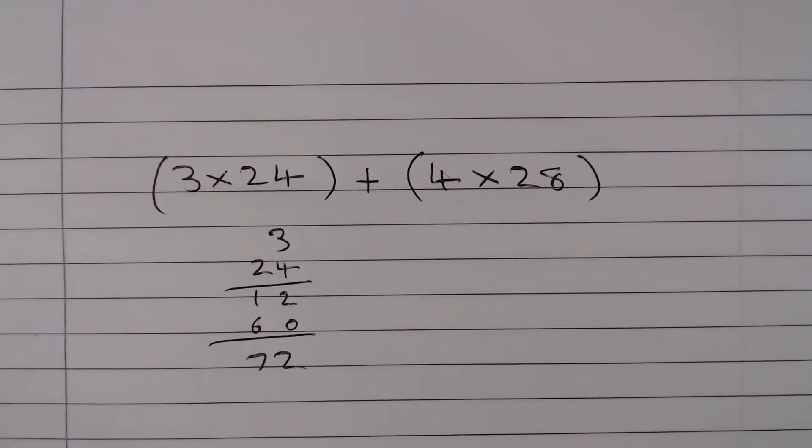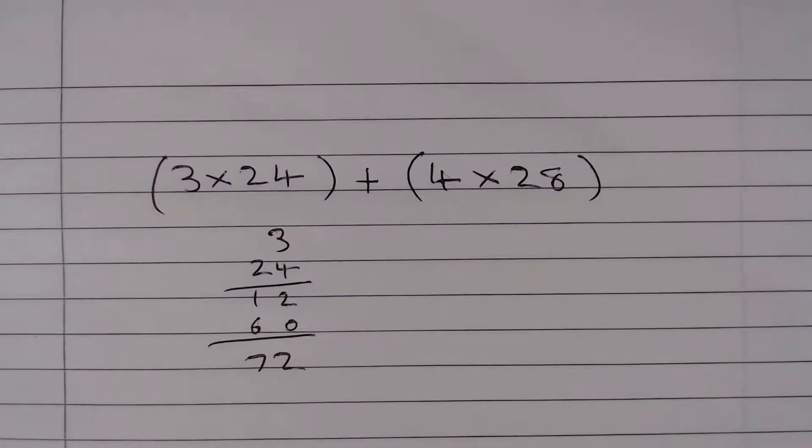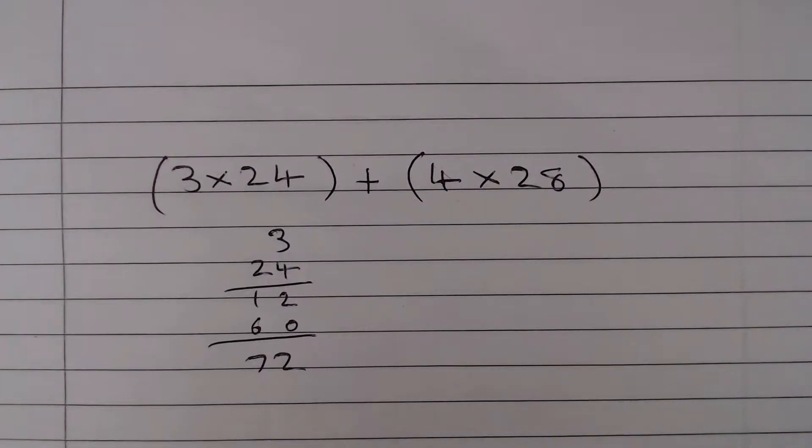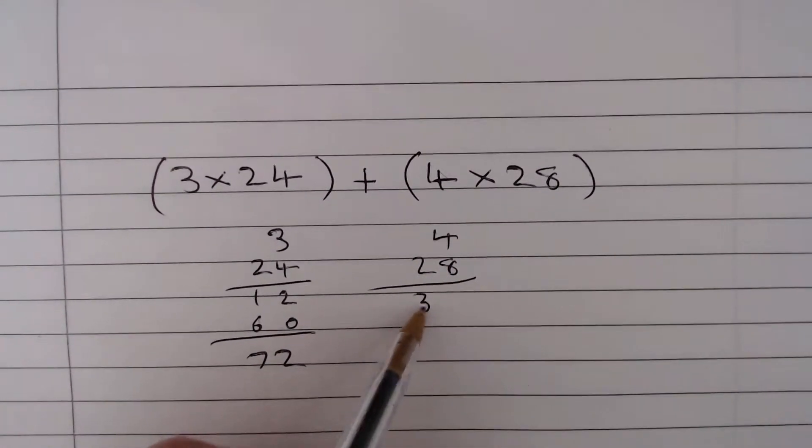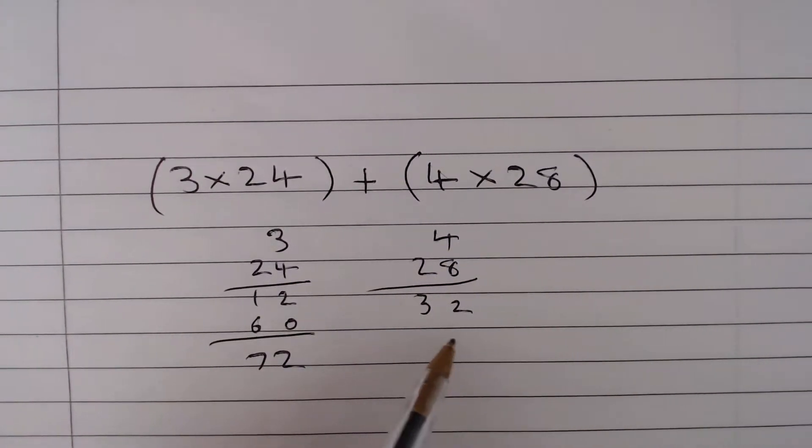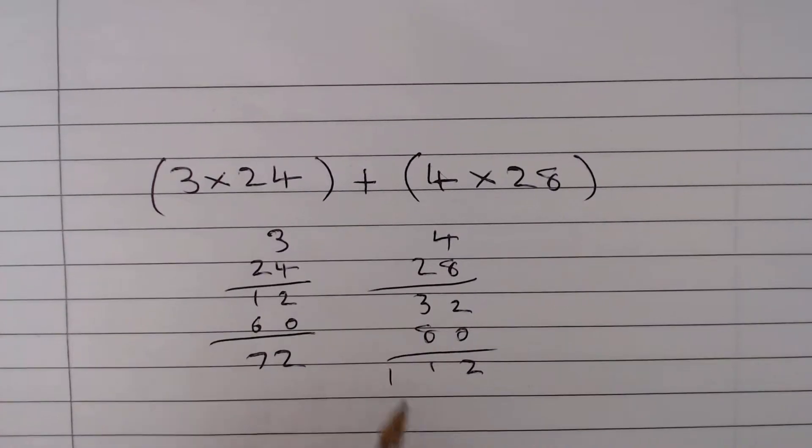And to do 4 times 28, well multiplying by 4 is the same as multiplying by 2 twice. So we could say that 2 times 28 is 56, times by 2 again gives us 112. If not though we could just do it in a grid: 8 times 4 is 32 and 2 times 4 is 8 with a 0. And when we add those together we are going to get 112.